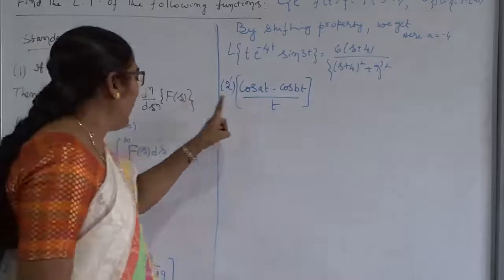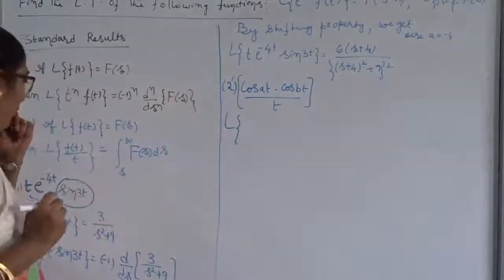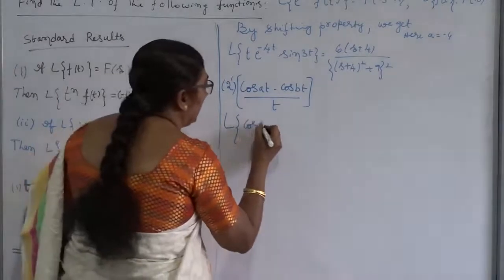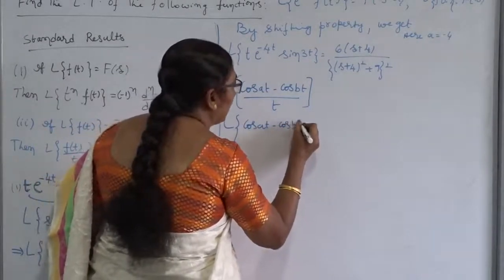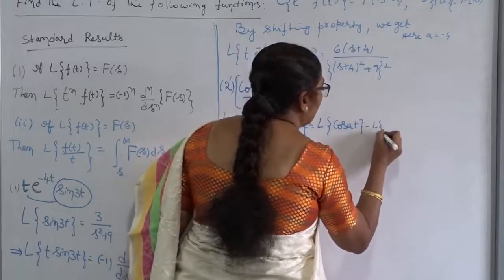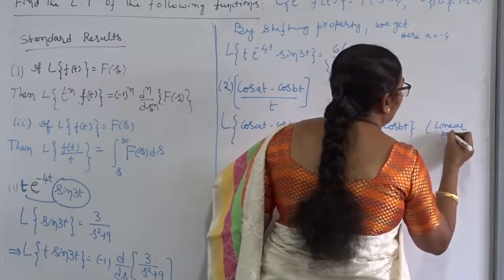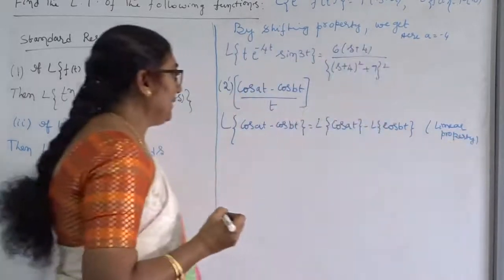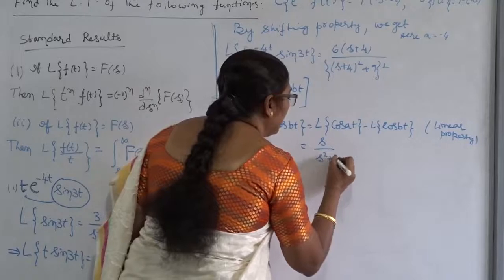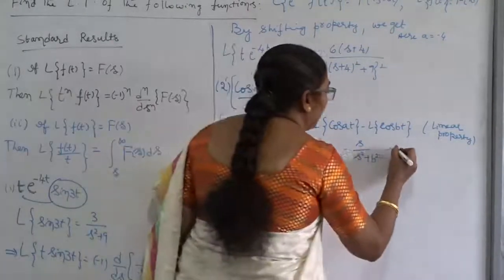We are going to solve this problem using the second result, because we have t in the denominator. If we want to apply this result, we first find F(t), which is the numerator function: cosAt minus cosBt. From the linear property, this can be written as the Laplace Transform of cosAt minus the Laplace Transform of cosBt, which gives s/(s² + A²) minus s/(s² + B²). This is my capital F(s).